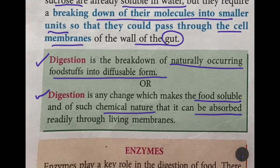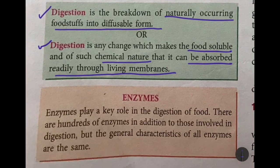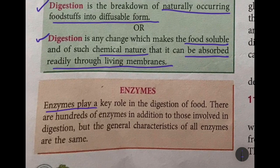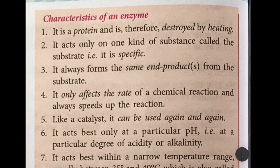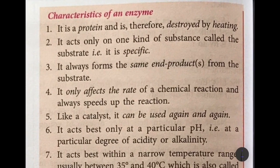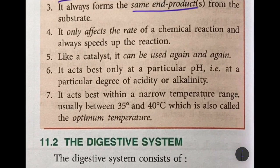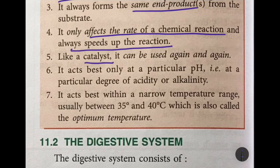Now enzymes play the most important role in digestion. There are hundreds of enzymes in our body but their basic characteristics are the same. An enzyme is a protein, so it is destroyed by heating. It acts only on one kind of substance called the substrate, it always forms the same end products, it only affects the rate of a chemical reaction, and always speeds up the reaction. Enzymes are also known as biological catalysts because, like catalysts, they can be used again and again without being changed in the reaction.